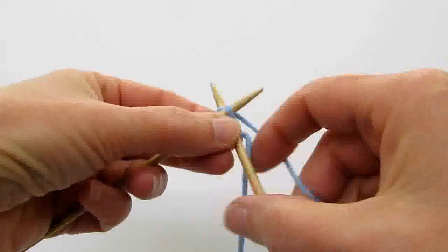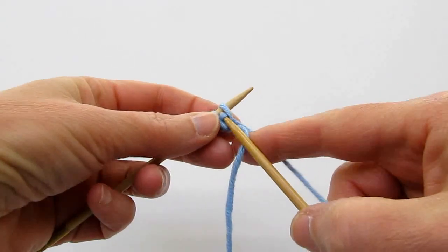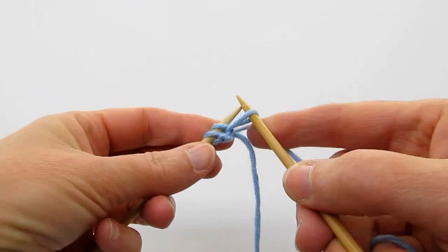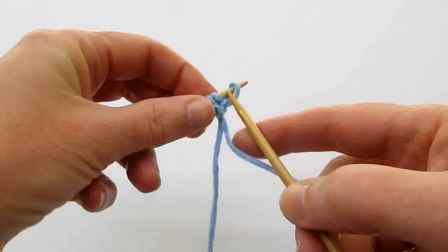You're going to knit around, pull it through, and just like a knitted cast on, give it a little twist and put it on.